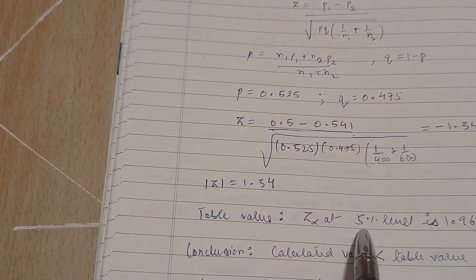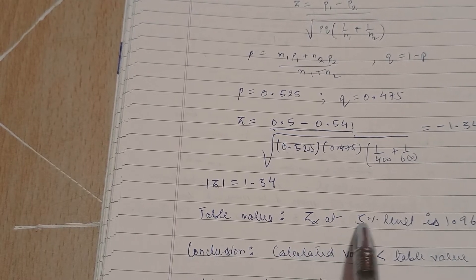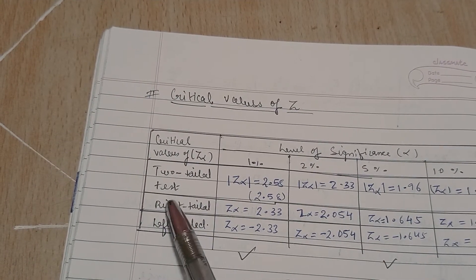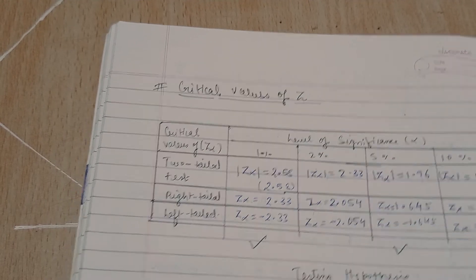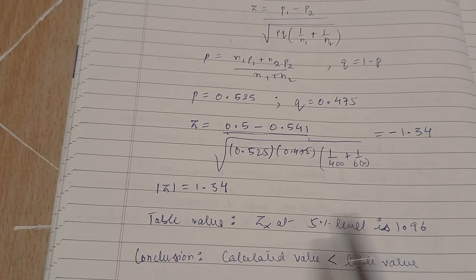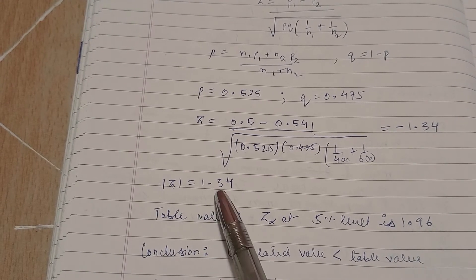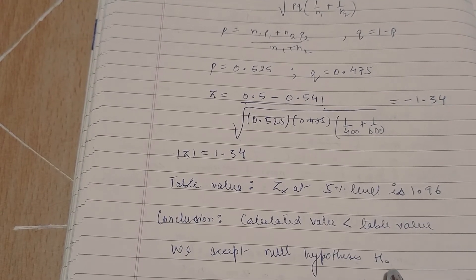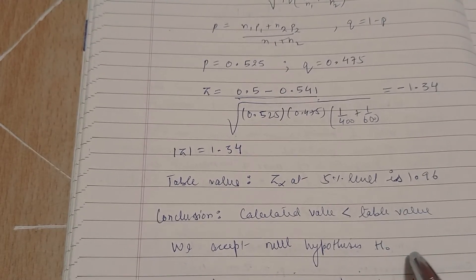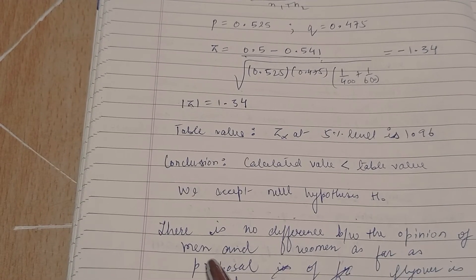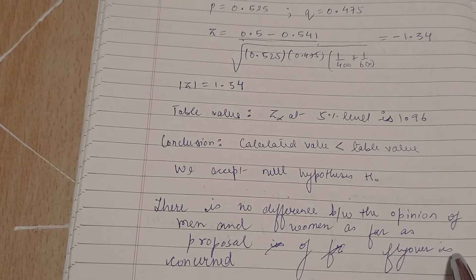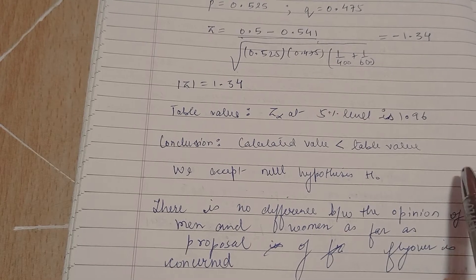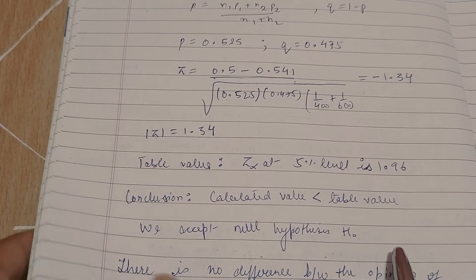The table value at 5% significance level for a two-tailed test is z_alpha = 1.96. The calculated value 1.34 is less than the table value 1.96, so we accept the null hypothesis H0: p1 = p2. Therefore, there is no significant difference between the opinions of men and women regarding the flyover proposal.